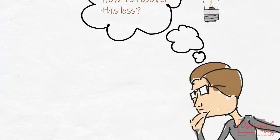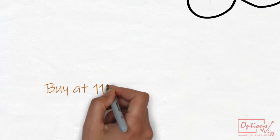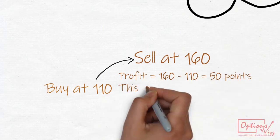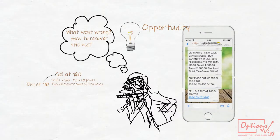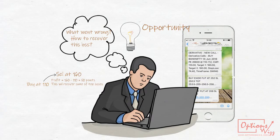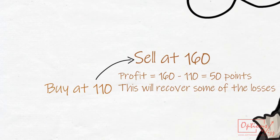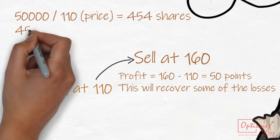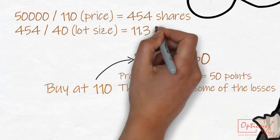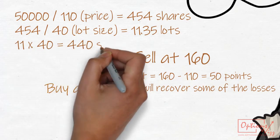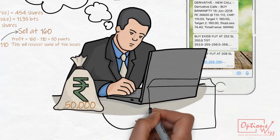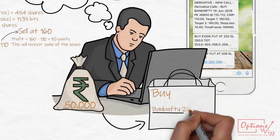Raj sees an opportunity to recover his loss and does simple calculation: buy at 110 and sell at 160, profit equals 50. Raj wants to give his last and best try. He arranges for another rupees 50,000 and does another simple calculation. With 50,000 rupees, he can buy 440 shares of Bank Nifty 26,600 put.